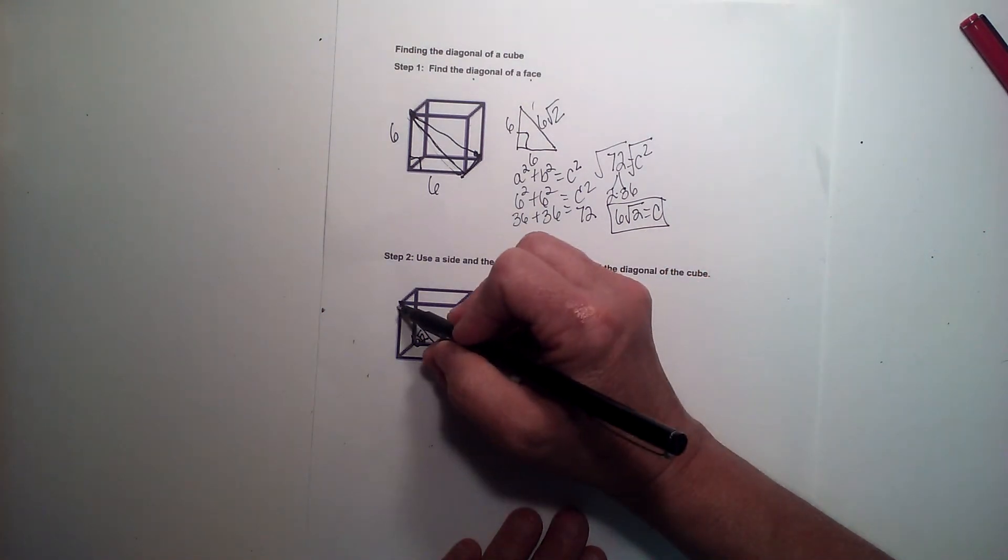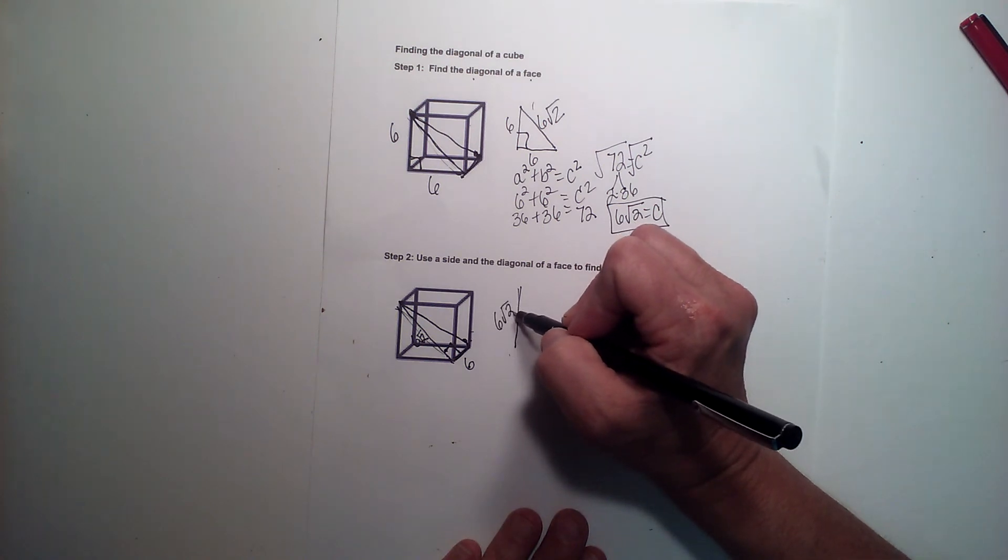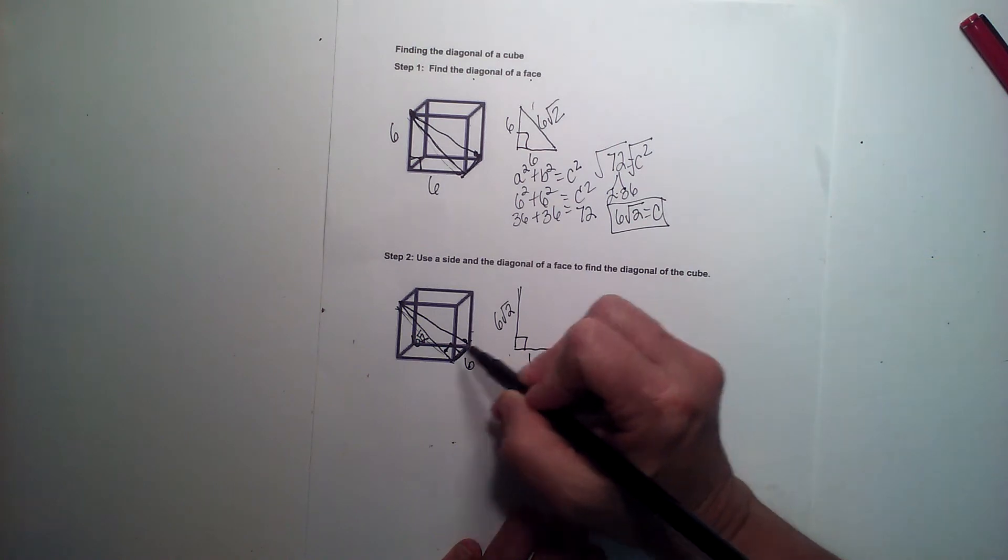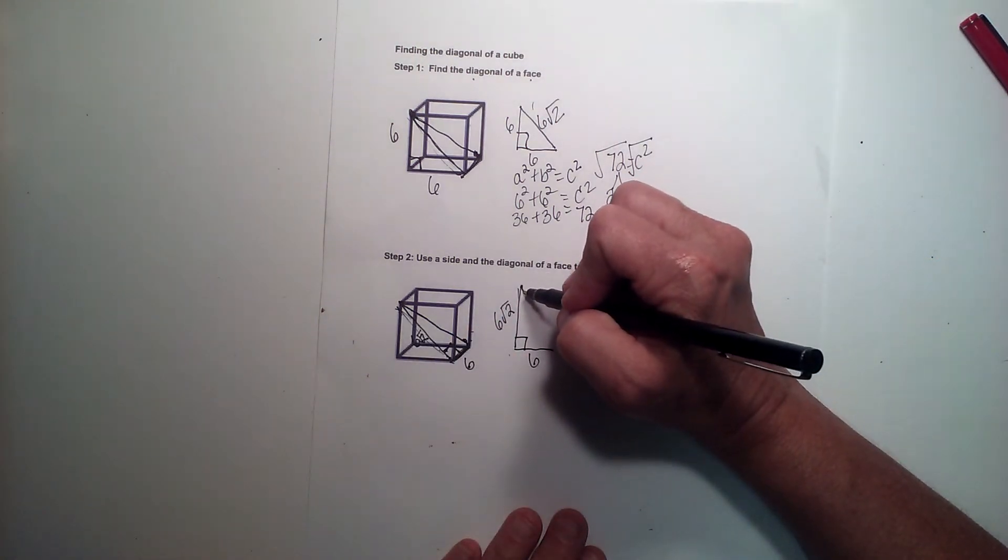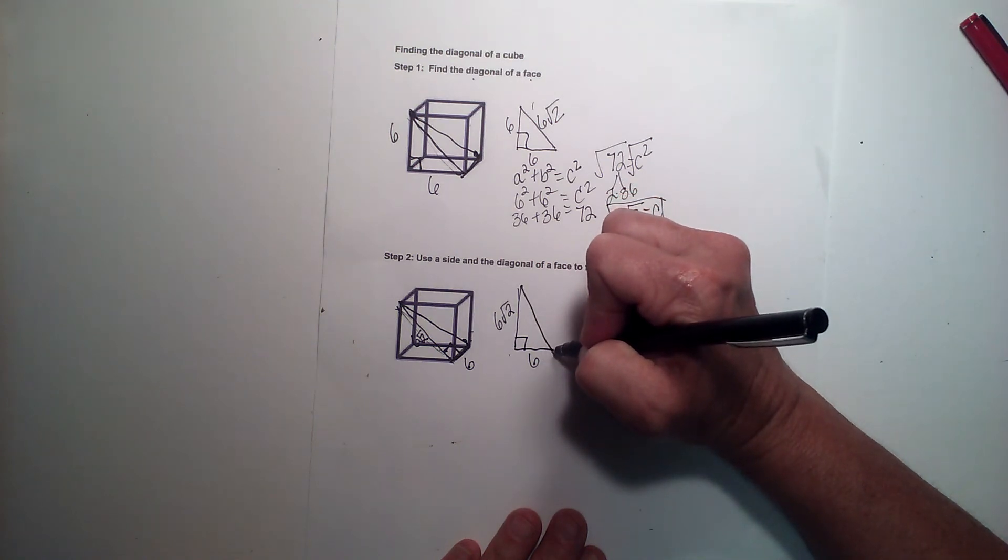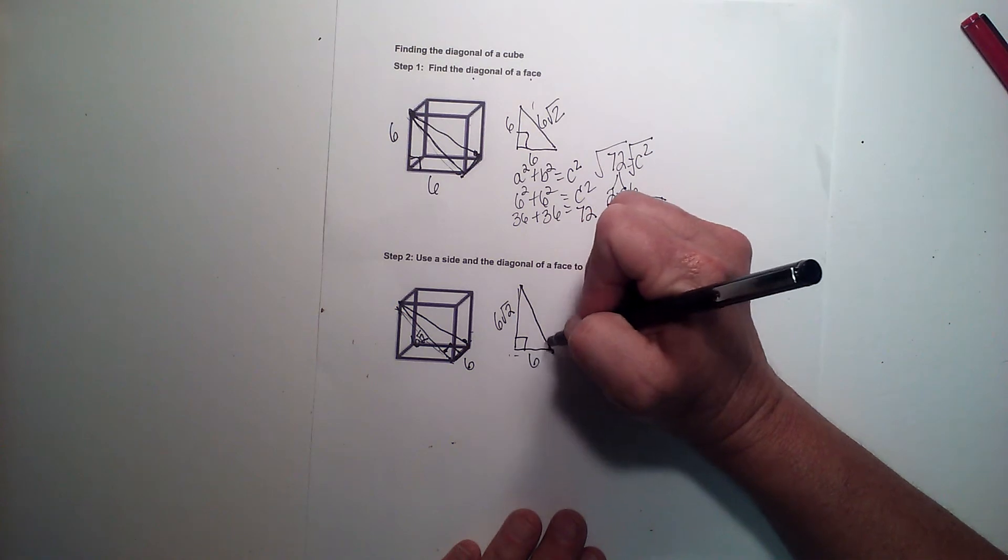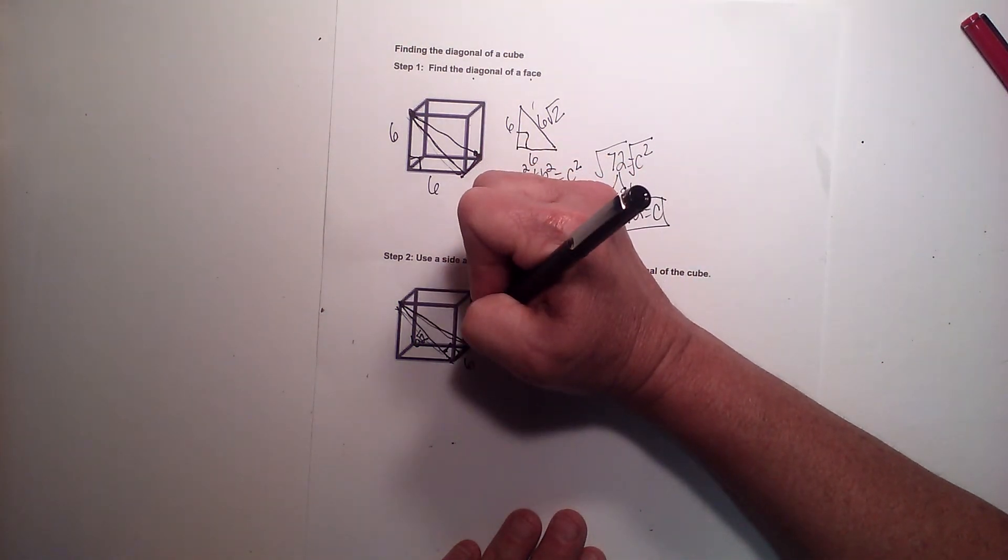Okay, this piece is right here. And that's 6 square root 2. The base is 6. And my right angle connects these two sides. So I'm trying to find the length of this right here. Okay, this is the hypotenuse of this triangle, but it's also the length of the diagonal in the cube.